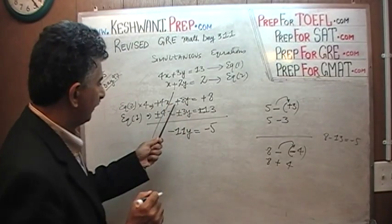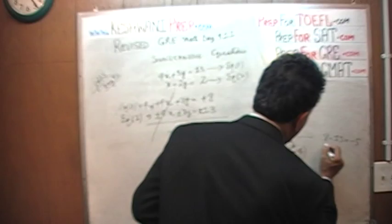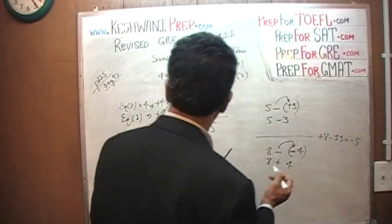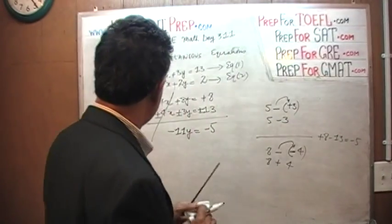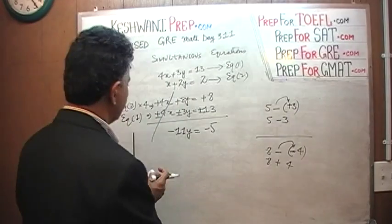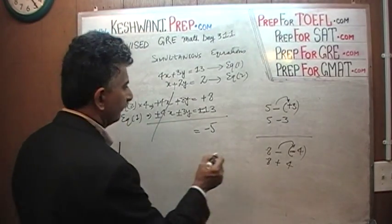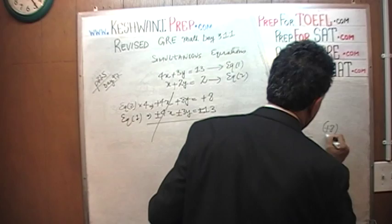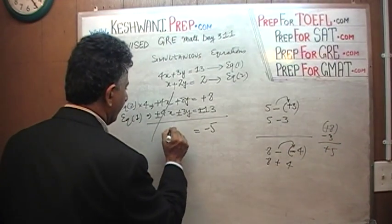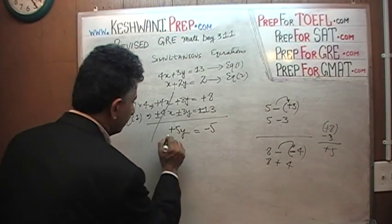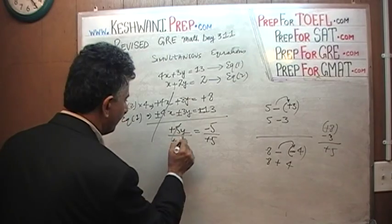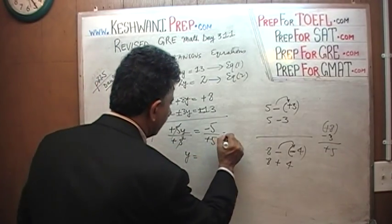So now we have positive 8 and a negative 3, which gives us positive 5. So, positive 5y equals negative 5. We divide both sides by 5, the 5 drops out, and y equals negative 1.